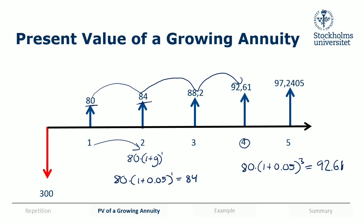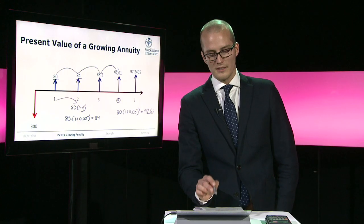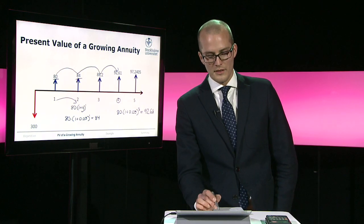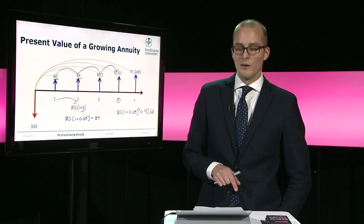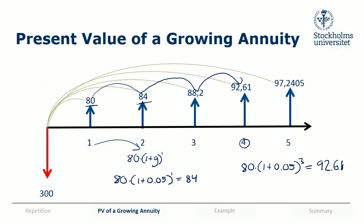If there is equal growth between any two consecutive cash flows, and if the cash flows have exactly one period between them — one year between the first and second, one year between the second and third, and so on — and if the growth is 5% between the first and second, it must be 5% between the second and third as well. We now have a formula to calculate the present value of all these cash flows at once.